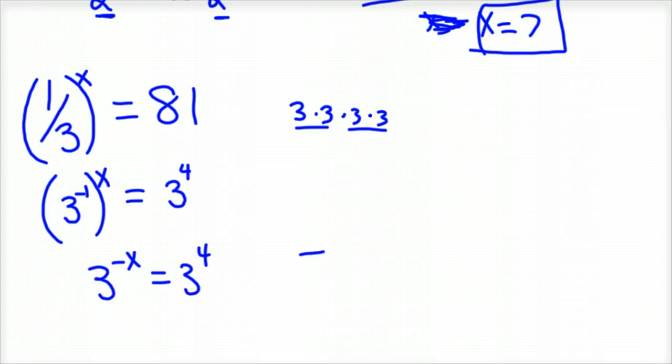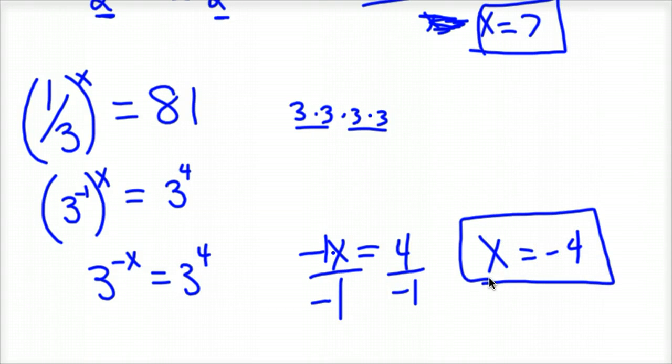And so negative x equals 4. If there's not a number here, you can put a 1 there, so that's negative 1 times x. We're going to divide by negative 1 on both sides of the equation to finish it out, or multiply by negative 1. And x is equal to negative 4. You could plug that in, get your calculator and do 1/3 to the negative 4 power and see if you get 81. That will conclude that. That's kind of what we're looking at if they're at the same base.